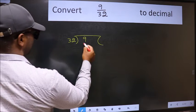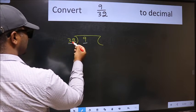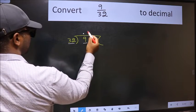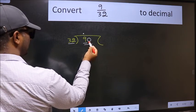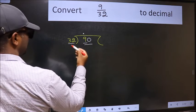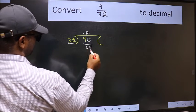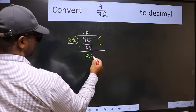Here we have 9 and here 32. 9 is smaller than 32, so what we should do is put a dot and take 0. So 90. A number close to 90 in the 32 table is 32 times 2, which is 64. Now we should subtract. We get 26.